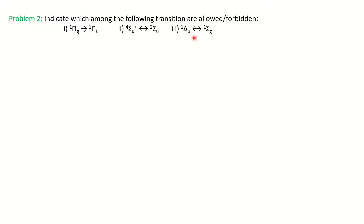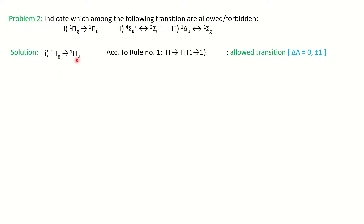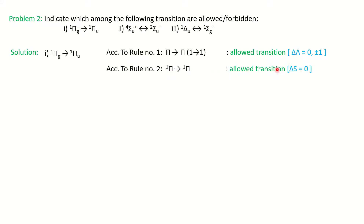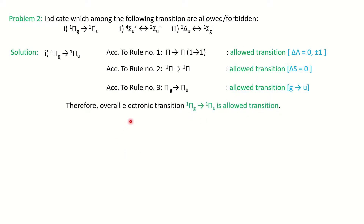Problem 2, transition (a): ¹Πg→¹Πu. Rule 1: Π→Π (1→1, Δλ=0) — allowed. Rule 2: singlet to singlet (ΔS=0) — allowed. Rule 3: g→u — allowed. Since the transition is allowed with respect to each rule, the overall electronic transition is allowed.